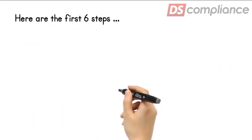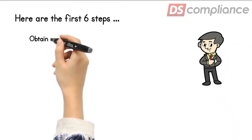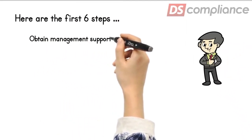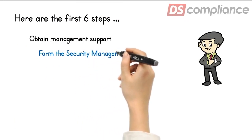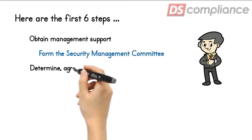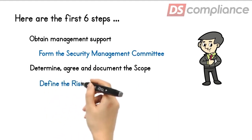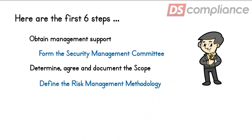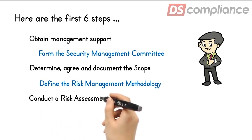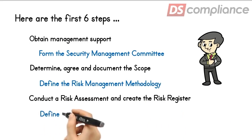Here are the first six steps. Obtain management support. Form the security management committee. Determine, agree, and document the scope of the ISMS. Define the risk management methodology. Conduct a risk assessment and create the risk register. And then define the risk treatment plan.